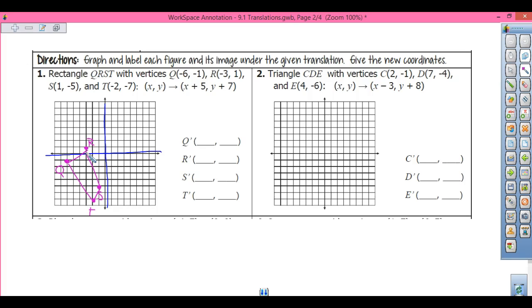Now, this thing right here tells me what my translation is. It tells me that I'm going to make a slide horizontally 5 and vertically 7. So for all my x's, I have to add 5. For all my y's, I'm going to add 7. So I go to my Q, and my Q prime is going to be -6+5, which is -1, and my y is going to be -1+7, which is 6.